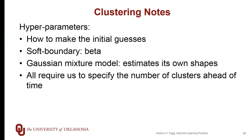For the soft boundary algorithm, we have a beta parameter that controls the sharpness of our Gaussian distributions. For the Gaussian mixture model approach, the algorithm itself actually gets to choose the shape of the Gaussian. All of our algorithms require us to specify the number of clusters ahead of time, though there are some algorithms out there that explicitly reason about when new clusters need to be created to handle parts of the space not being captured very well.